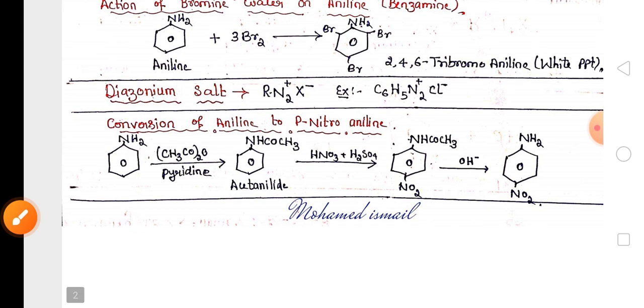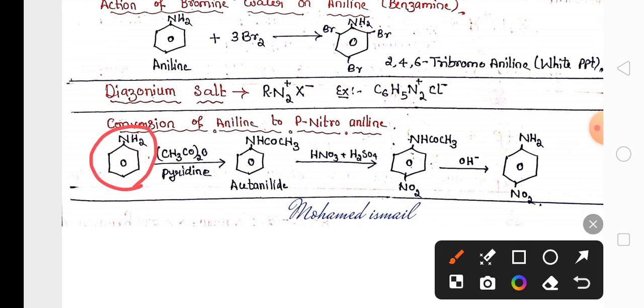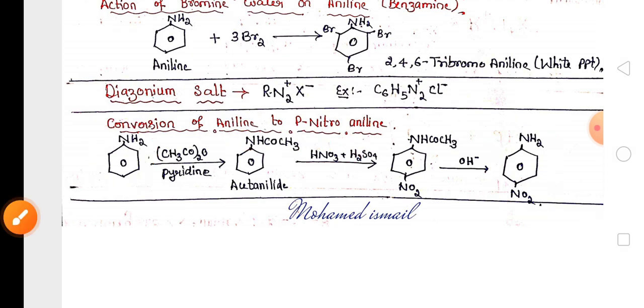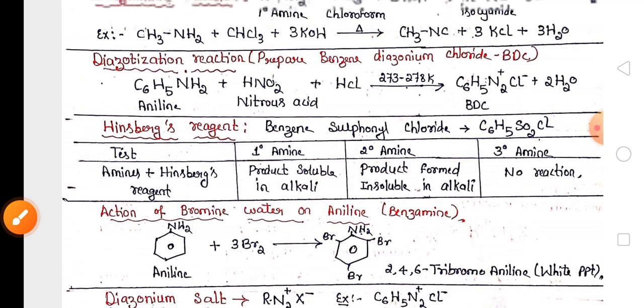One more important reaction is conversion of aniline into para-nitroaniline. Here you cannot directly use nitrating mixture because nitric acid is a strong oxidizing agent. It will oxidize amine group. So you need to protect the amine group by doing acetylation. Then you add nitrating mixture, then you will get para-nitroaniline.